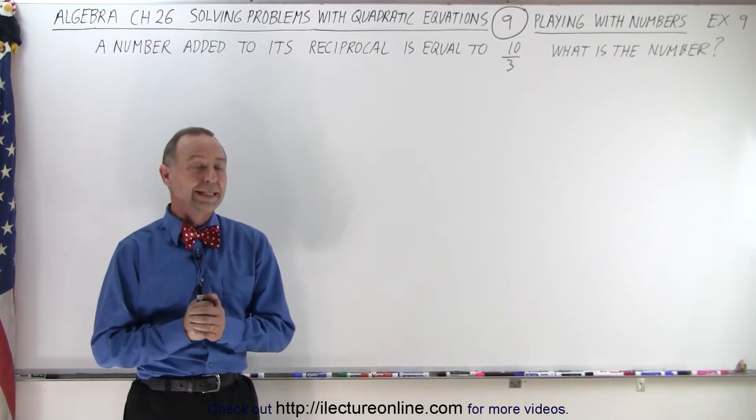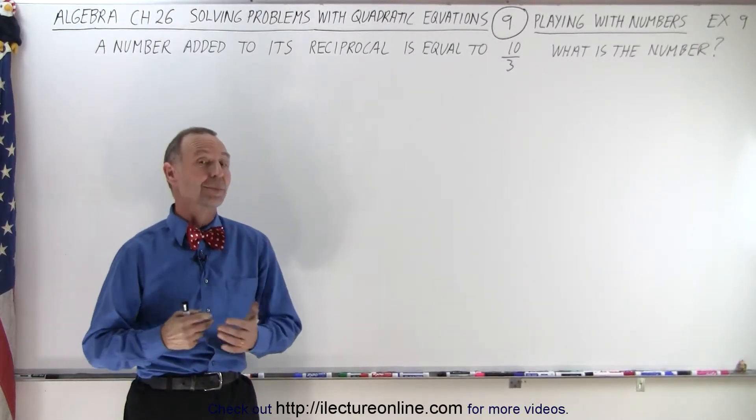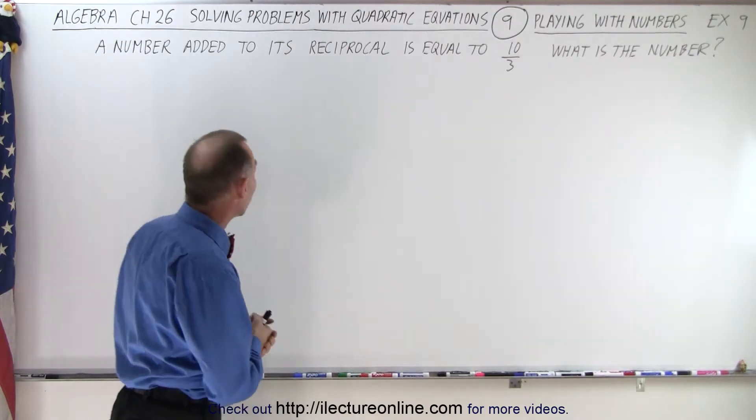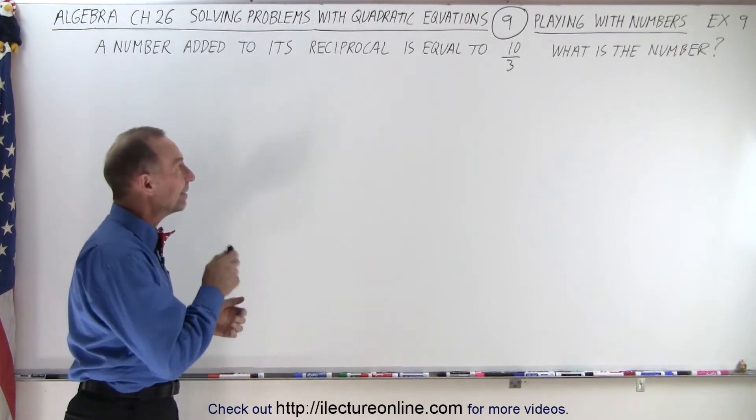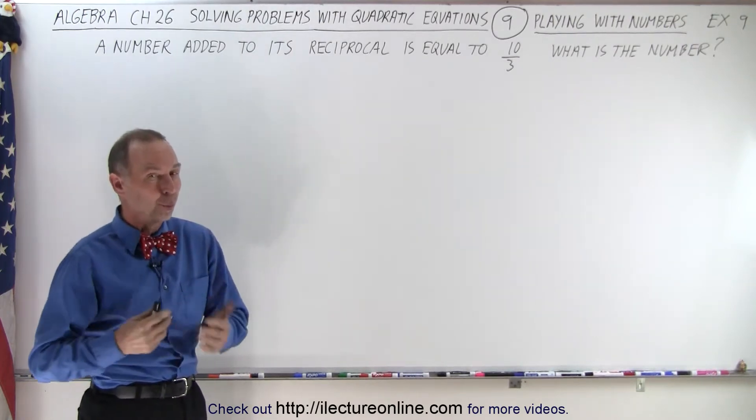Welcome to my lecture online, continuing to play with numbers. Let's say that we have a number such that when added to its reciprocal, the sum is equal to 10 over 3. What is the number?